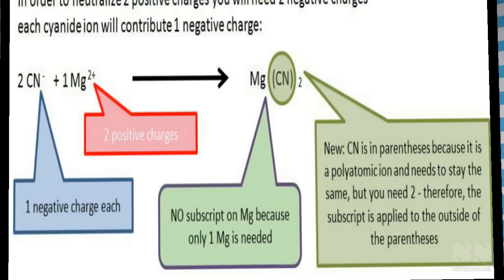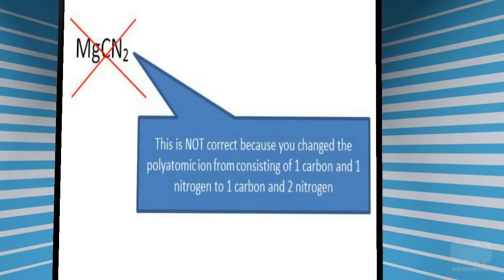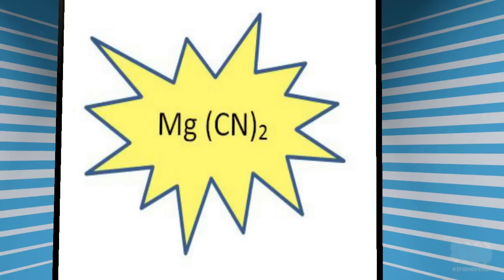Why can't I just write the two as a subscript behind the N? You mean like this? The reason why this isn't correct is because by putting the subscript next to the nitrogen, you change the polyatomic ion. Instead of containing only one nitrogen, the polyatomic ion now has two nitrogen. The correct way of writing it is to place the polyatomic ion in parentheses and then apply the subscript to the whole polyatomic ion. That way you do not change the ion, but the reader now knows that you need two cyanide ions.